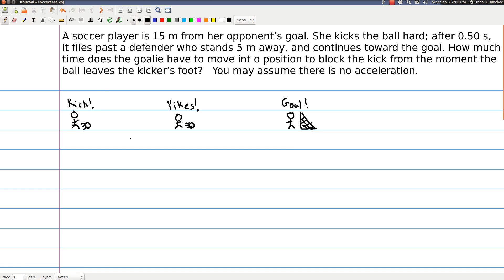But we do need to label everything. Okay, so what we're going to do is start labeling positions. So I've got x1, x2, and x3, because there are three positions that we're worrying about in this question, right? Where the ball starts, when it passes the defender, and when it gets to the goal. We've also got times that correspond to each of those positions. So I've got t1, t2, and t3.